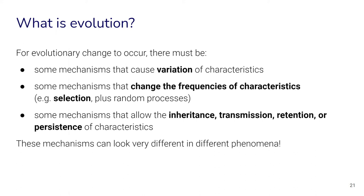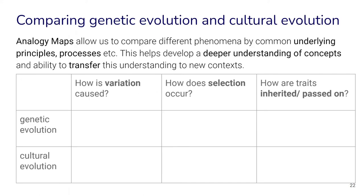This is where our approach of conceptual learning and learning transfer come in, along with one of the teaching tools from the Global ESD Design Concept. We suggest the use of analogy maps to help us compare different phenomena by comparing common underlying principles and processes. This helps develop a deeper understanding of concepts and the ability to transfer this understanding to new contexts. Here's a simple analogy map between genetic evolution and cultural evolution along these principles.